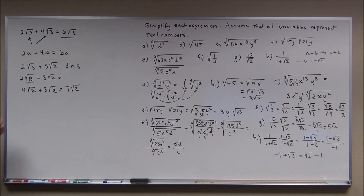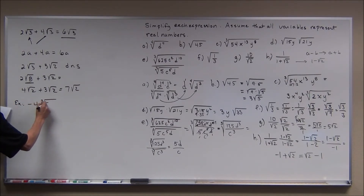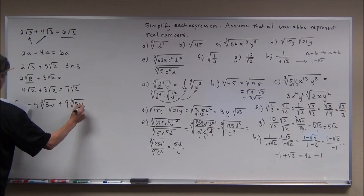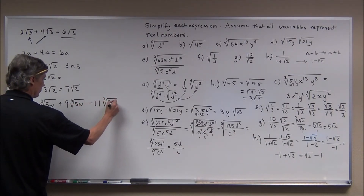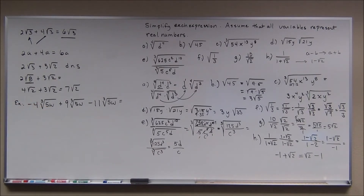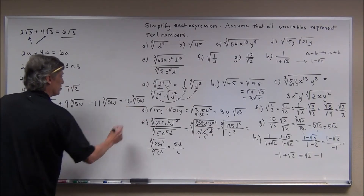Here's a more complicated example. We're adding and subtracting as indicated, and the variables represent positive real numbers. My example is negative four times the cube root of five w, plus nine times the cube root of five w, minus eleven times the cube root of five w. All the radicals are the same, so I just combine the coefficients: negative four plus nine minus eleven equals negative six. The answer is negative six times the cube root of five w.